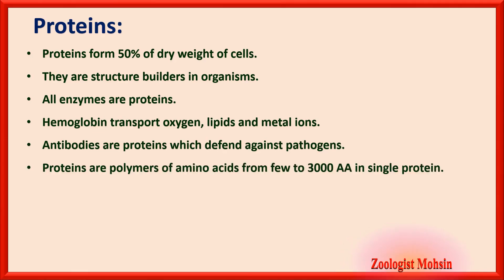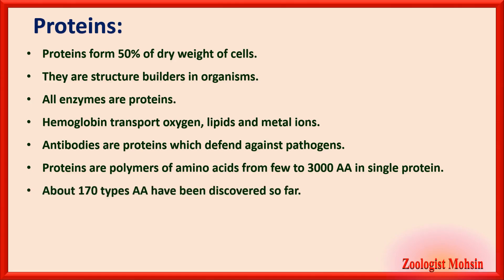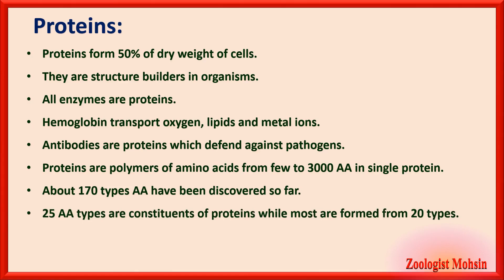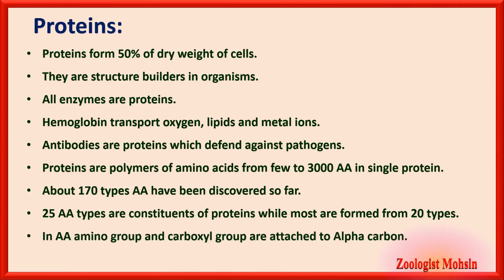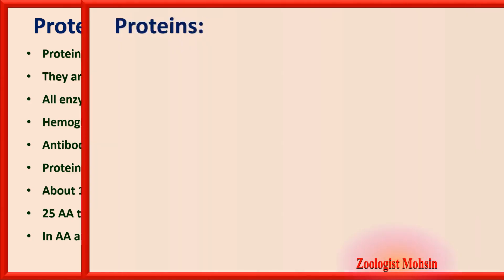Proteins are polymers of amino acids — the building blocks of proteins are amino acids, from a few amino acids up to three thousand in a row or in different chains. About 170 types of amino acids have been discovered so far, and among these 170, twenty-five are constituents of proteins. Most proteins are formed from 20 types of amino acids. In an amino acid, the amino group and carboxyl group are attached to the alpha carbon.